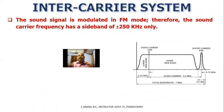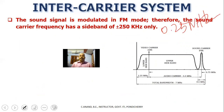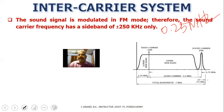This is the intercarrier system — managing video and audio carriers correctly so the audio carrier is 5.5 MHz above the video carrier. The sound signal is modulated in FM. The FM sideband is plus or minus 250 KHz (0.25 MHz), so the total sound signal area is 0.5 MHz (500 KHz).